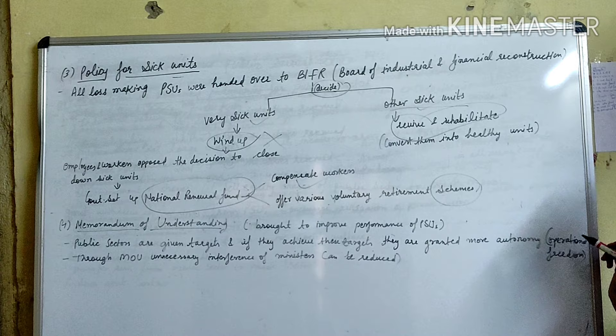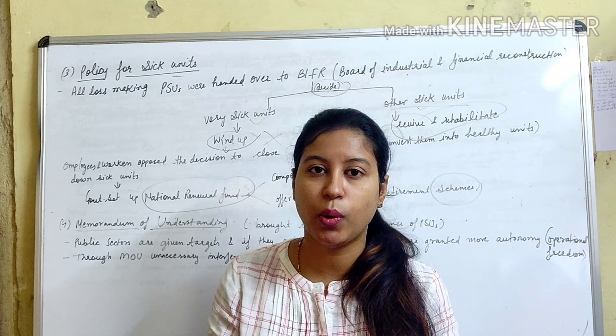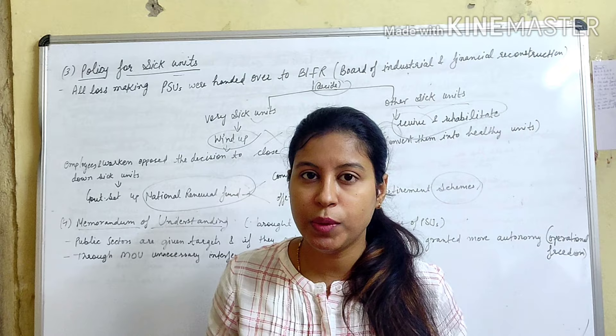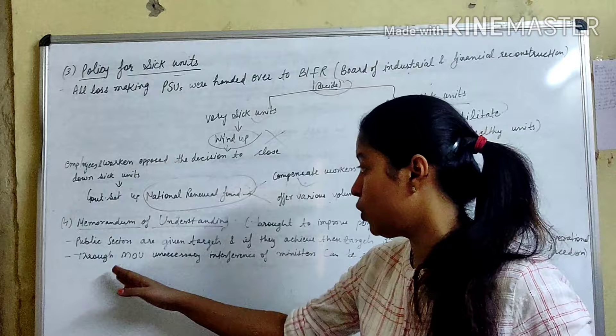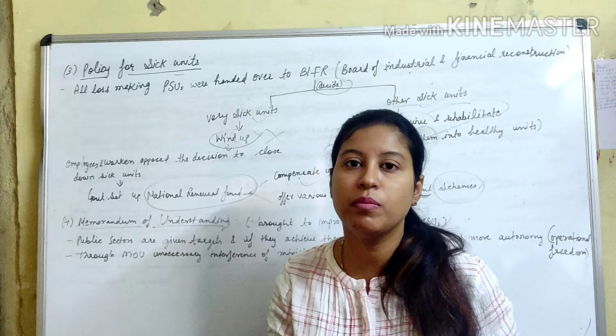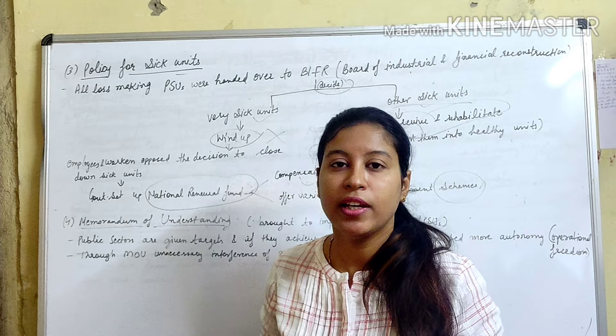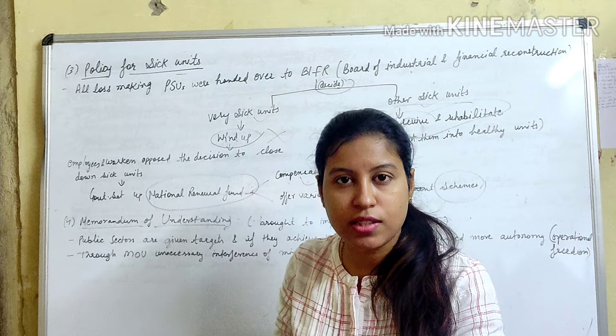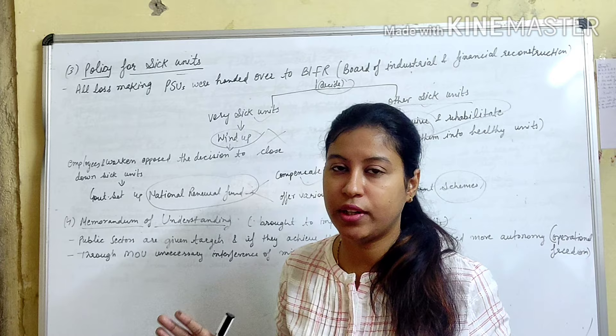The government told public sector units that if they achieve their given targets, they will get full operational freedom and autonomy to make their own decisions. Through the MOU, unnecessary interference by ministers can be reduced. The idea was: achieve your targets, and the ministers will not interfere in your operations.